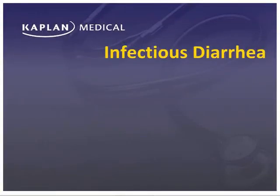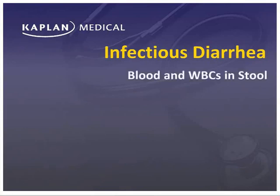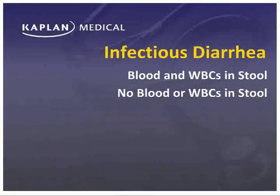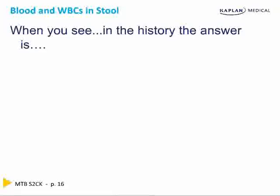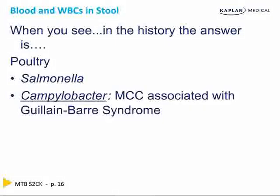The key to answering questions for infectious diarrhea is: is there blood or white cells in the stool, or is there no blood or white cells in the stool? When you see poultry in the history, the answer is Salmonella — chickens and eggs.